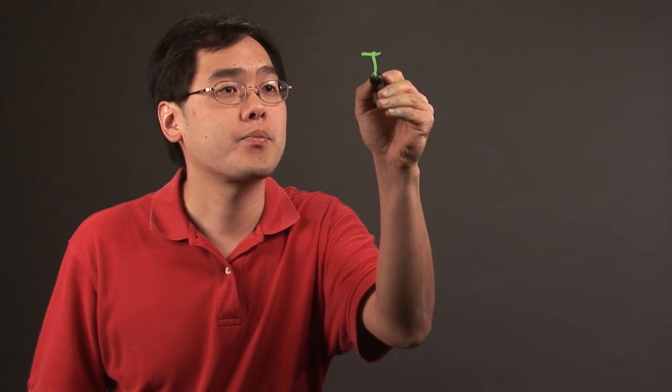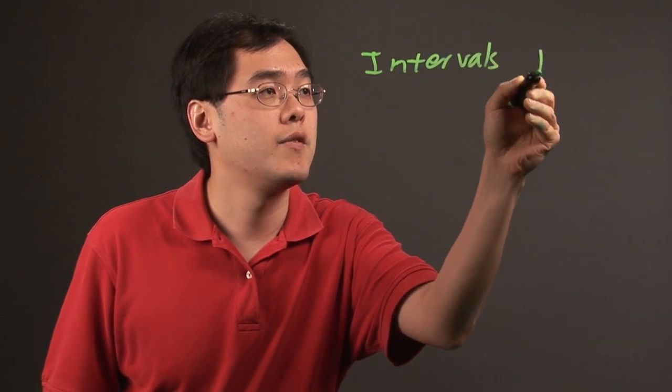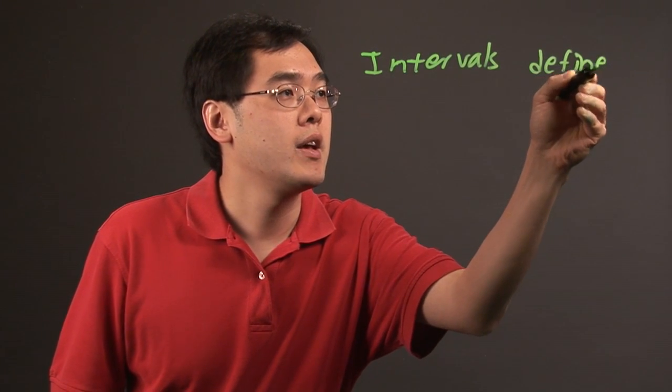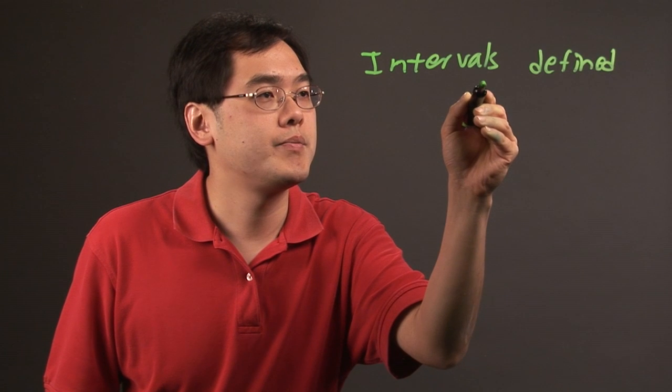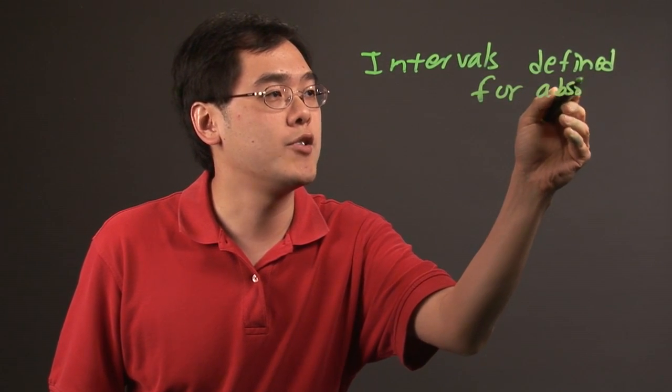Absolute value intervals definition is kind of a circular definition in that it's intervals defined for absolute value. It really depends on what kind of absolute value scenario that you have to work with.